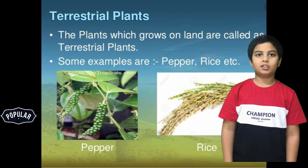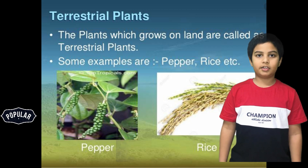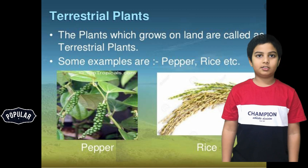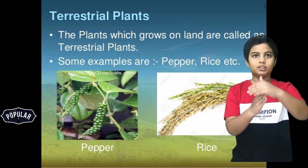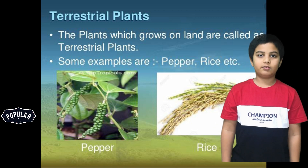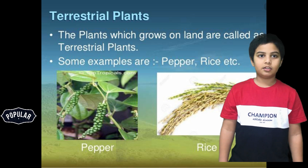Plants are classified into two different groups. Plants that grow on land are called terrestrial plants, and plants that grow underwater are called aquatic plants. First let's talk about the terrestrial plants.